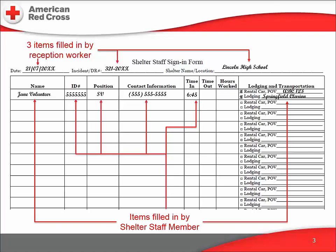Each line is intended for a single person: name, ID, position. The first three columns are for the staffer's name, Red Cross ID badge number, and assigned position on the shelter staff. Time in, time out, and hours worked — this provides a daily record of this staffer's hours. Lodging and transportation: this last column has information needed by logistics to keep track of the number of rental cars and hotel rooms that the Red Cross is paying for.